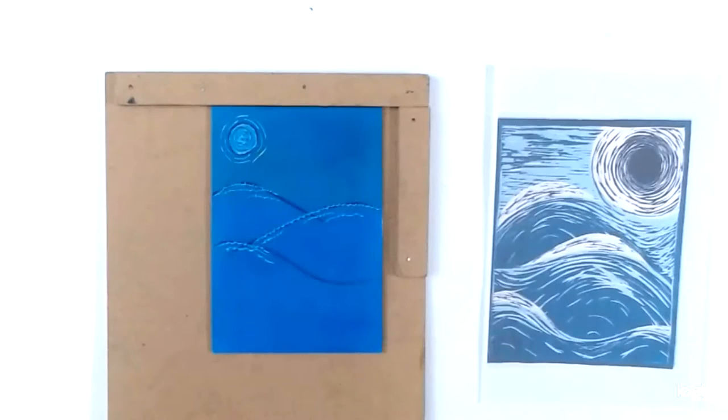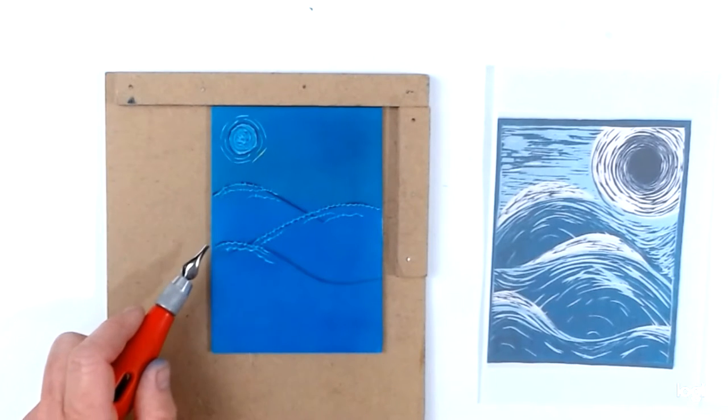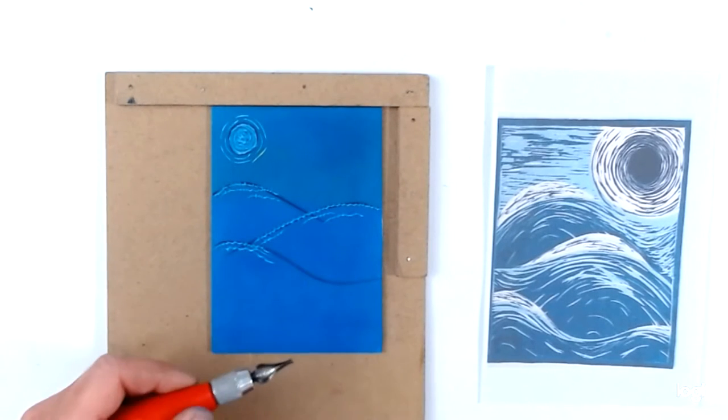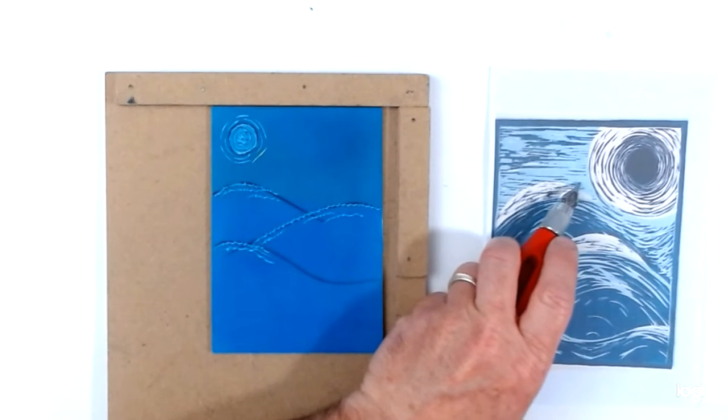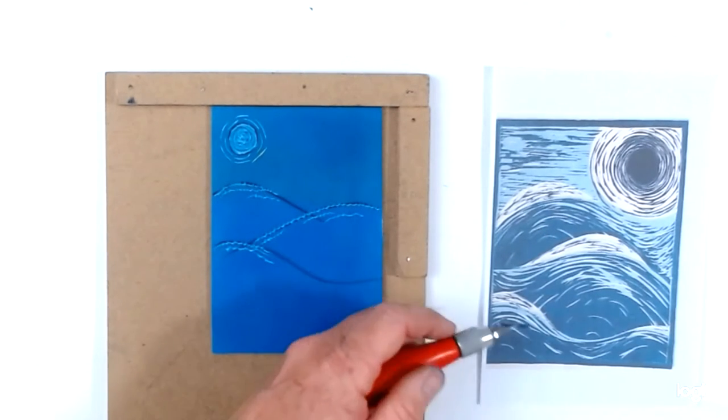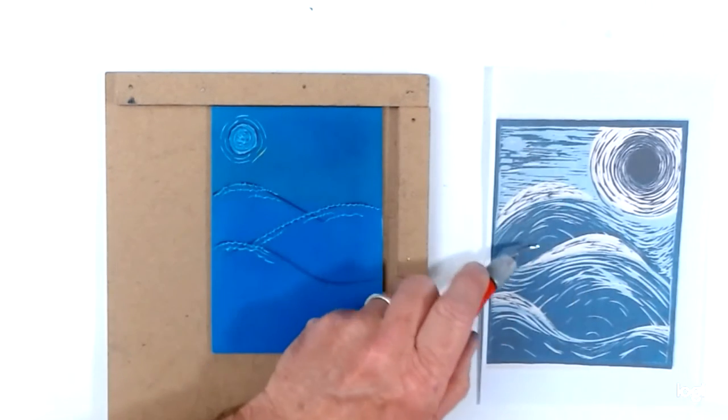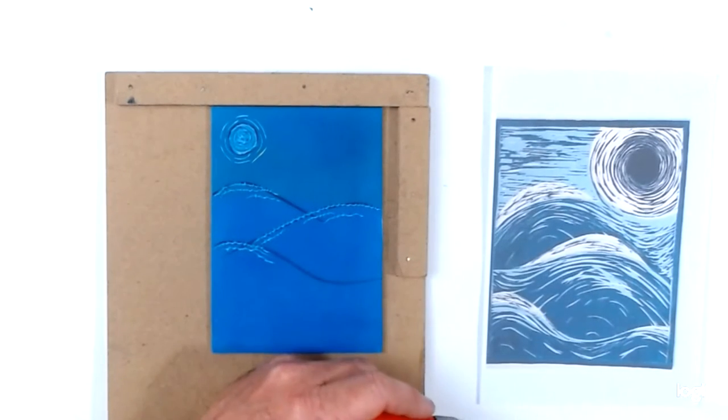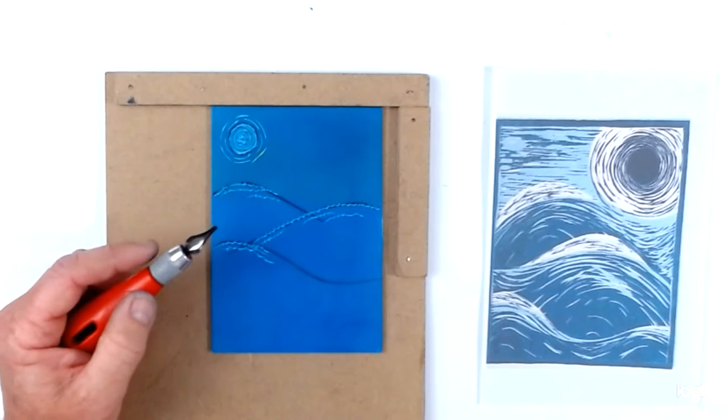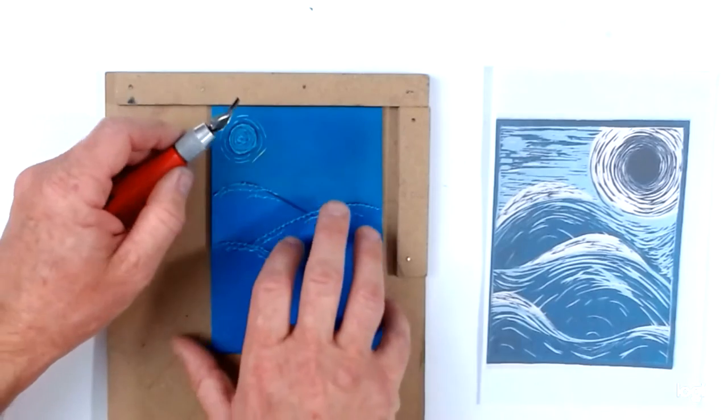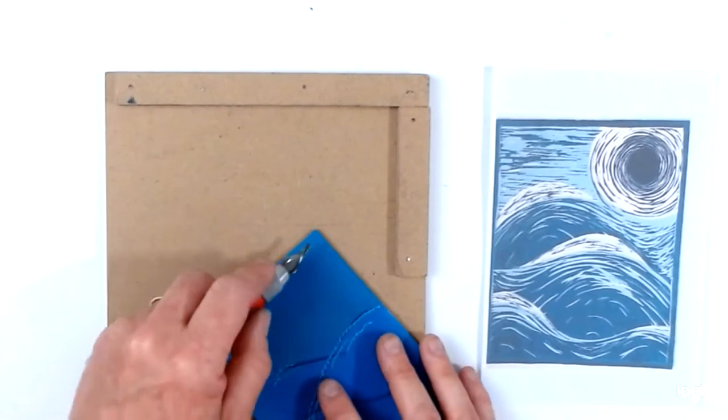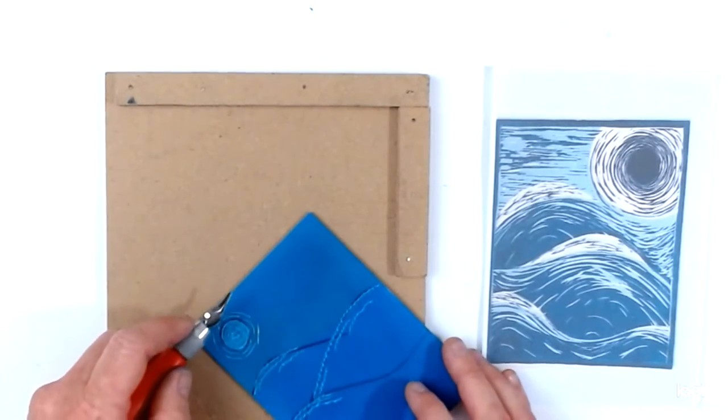The next stage is to cut more out of the lino. So I'm ready for my second cut now and what I'm going to cut away is everything I want to stay that first color I printed in, in other words on this picture the light blue. Another way of looking at it is that I'm going to cut everything away apart from the dark areas. It takes a little bit of getting your head around but you'll get there I promise. So I'm going to cut away most of the sky and quite a large amount of the sea.